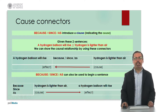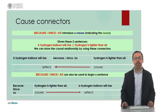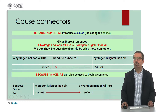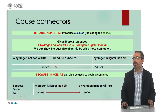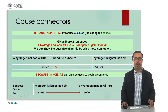We can also use some sentence connectors. The most important set of sentence connectors used to express the cause in the form of a clause are because, since, or as, all with the same meaning. For example, given these two facts: a hydrogen balloon will rise, and hydrogen is lighter than air — we can show the relationship of cause and effect. Normally they come in the middle connecting the two parts of the sentence: a hydrogen balloon will rise because, since, or as hydrogen is lighter than air. We have the effect and then the cause.